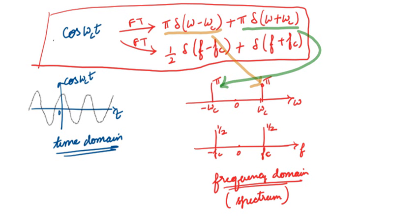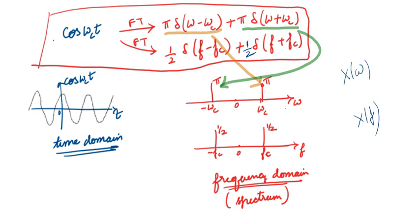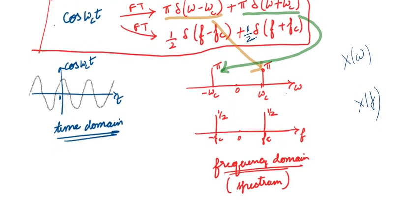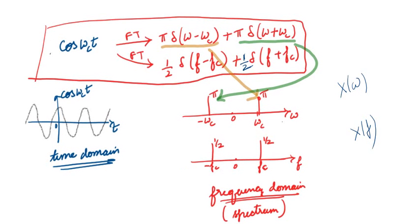We can also represent the spectrum in terms of f. In X(f), the spectrum has amplitude 1/2 at f = fc, since δ(0) = 1 making it 1/2. Similarly, at f = −fc, substituting gives δ(0) = 1, so the magnitude is 1/2. This is the expression for the Fourier transform of cos(ωct) either in terms of ω or in terms of f.